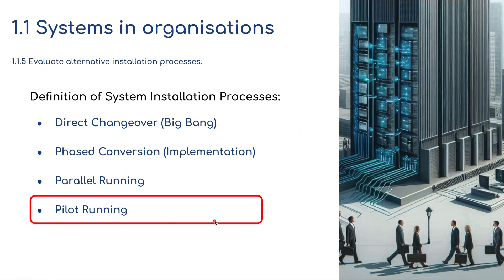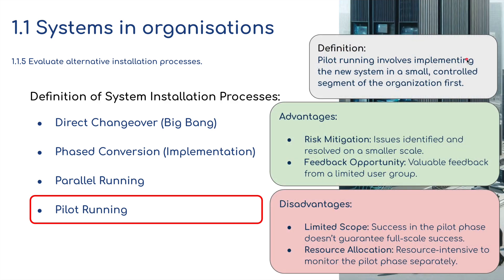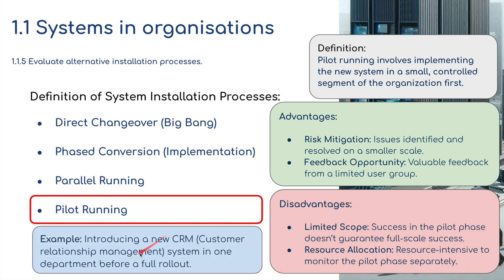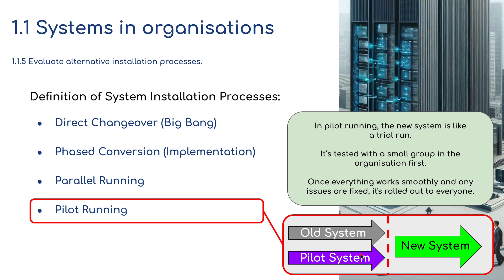Pilot running involves implementing the new system in a small, controlled segment of the organisation first. Advantages include risk mitigation — issues are identified and resolved on a small scale — and feedback opportunities from a limited user group. Disadvantages are limited scope — success in the pilot phase doesn't guarantee full-scale success — and resource intensity to monitor the pilot phase separately. Introducing a new CRM (Customer Relations Management) system into one department before a full rollout is a good example. The old system and pilot system run simultaneously before switching to the new system.